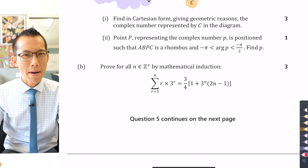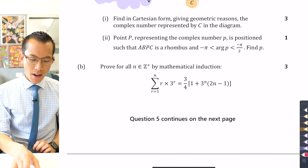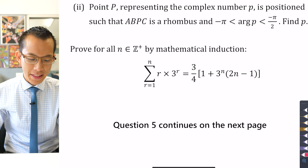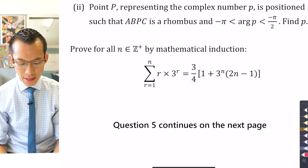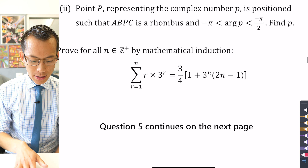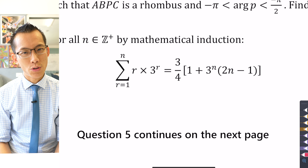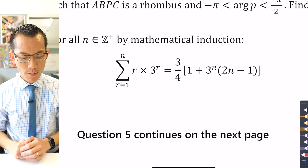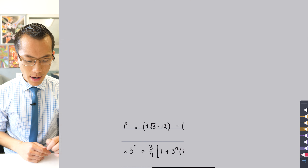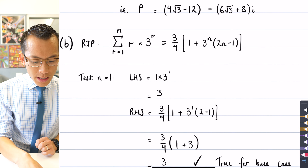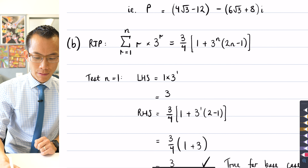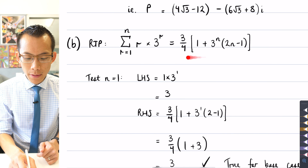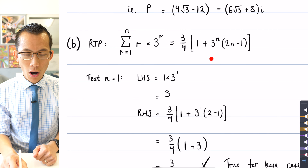The next question we're going to look at is a mathematical induction proof. Prove for all n which is an element of the positive integers by mathematical induction, using this sigma notation which we need to unpack. This question was done reasonably well, so I won't dwell too much on the solution. We've got our statement written here: this summation when expanded out should give us this particular expression on the right-hand side.